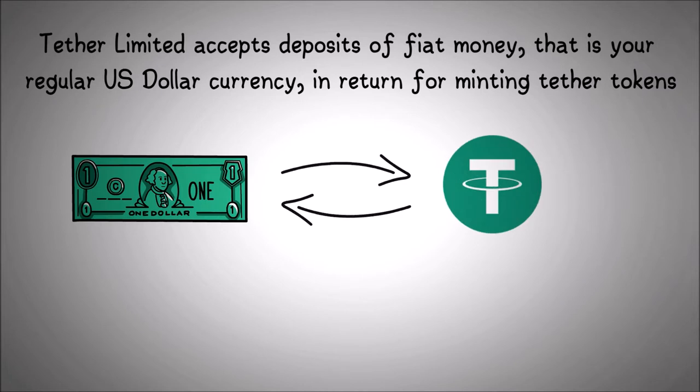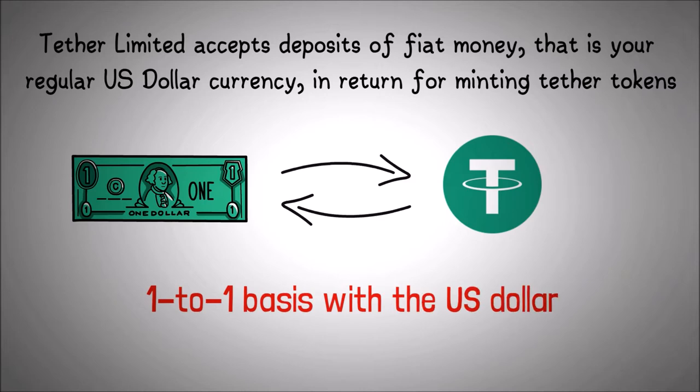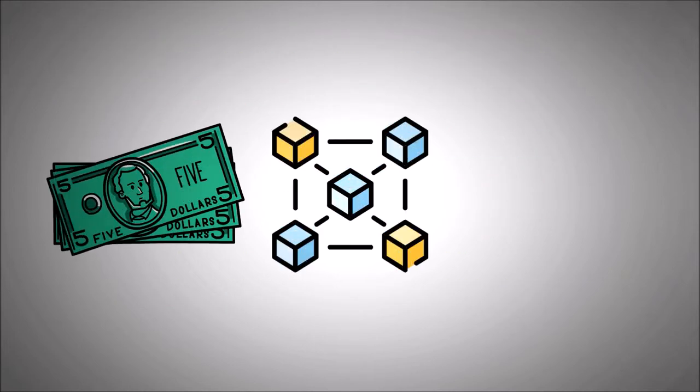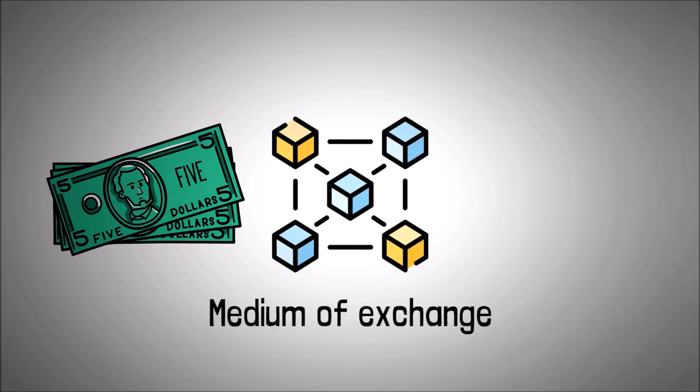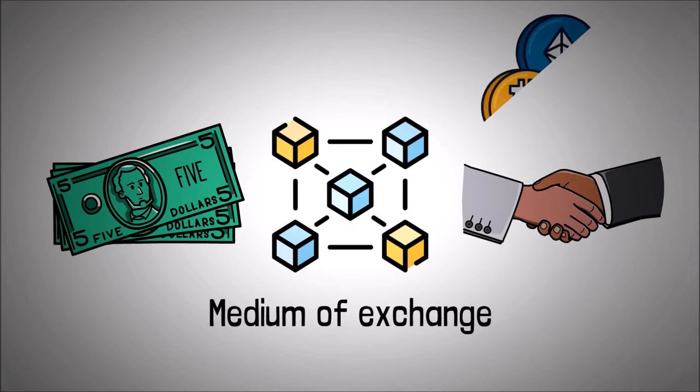Therefore, these tokens are pegged on a 1 to 1 basis with the US dollar. In other words, they act as a US dollar replacement in cryptocurrency format. They serve as a medium of exchange while trading in the crypto market and can be traded across different blockchains, including the Bitcoin blockchain and the Ethereum blockchain.